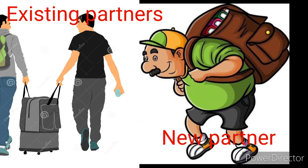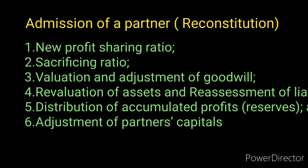Very important points during reconstruction of the partnership business, especially admission of a new partner: new profit and loss sharing ratios will be calculated, sacrificing ratios and gaining ratios will be determined, valuation and adjustment of goodwill, revaluation of assets and reassessment of liabilities via the revaluation account, distribution of accumulated profits and losses, and adjustment of partners' capital. These are all mandatory and most important adjustments during admission of a new partner.